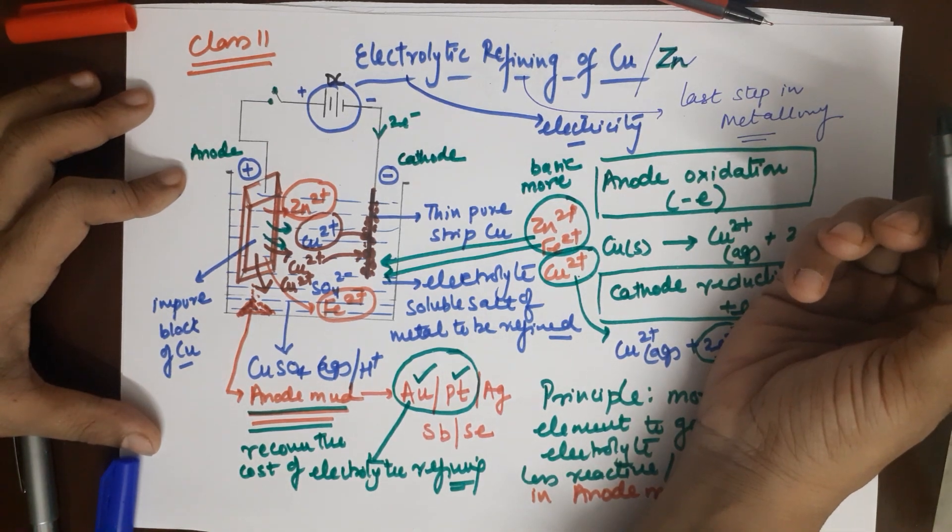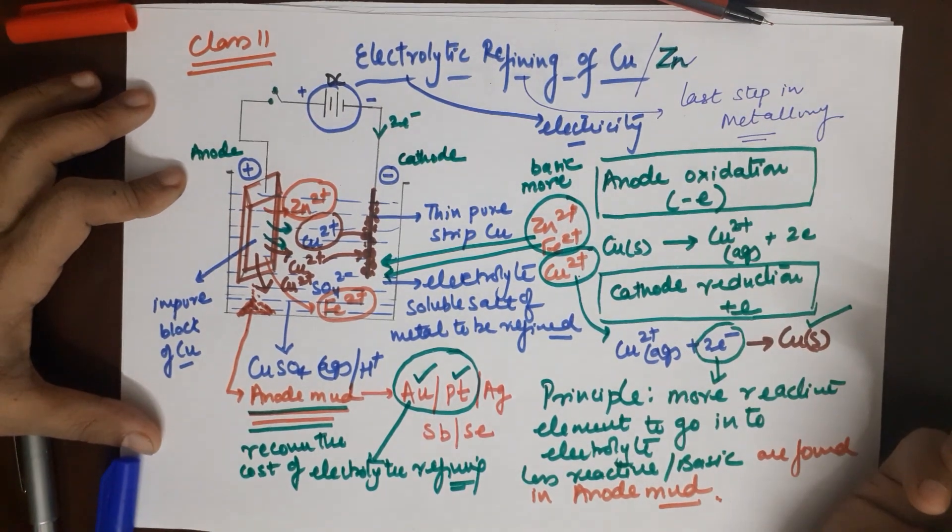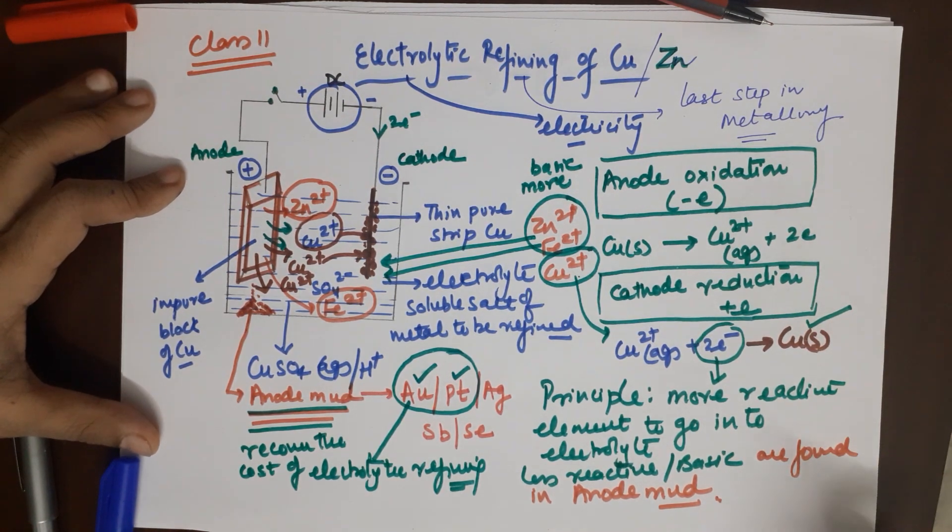With this I conclude my topic of electrolytic refining of copper. There are other methods of refining in class 11th which are zone refining, Mond's process, Van Arkel's process, chromatography, liquation, etc. They are all under the playlist of general principles of extraction. Please go to the playlist, like, share, and subscribe if you are understanding the way I teach. Thanks a ton, do well in life, stay blessed, please stay safe, thanks.